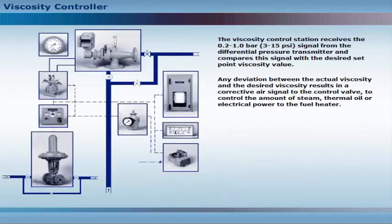The viscosity control station receives a 0.2 to 1.0 bar or 3 to 15 psi signal from the differential pressure transmitter and compares this signal with the desired set point viscosity value. Any deviation between the actual viscosity and the desired viscosity results in a corrective air signal to the control valve to control the amount of steam, thermal oil or electric power to the fuel heater.